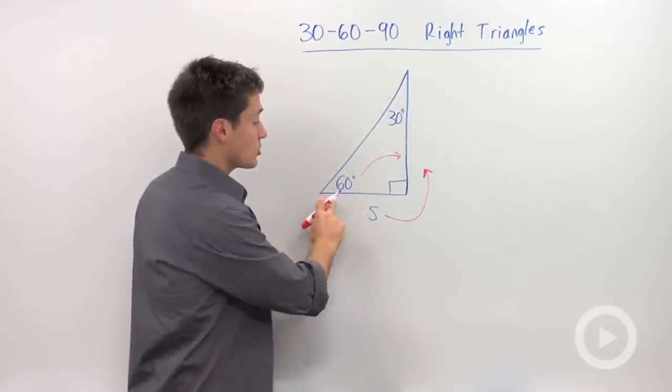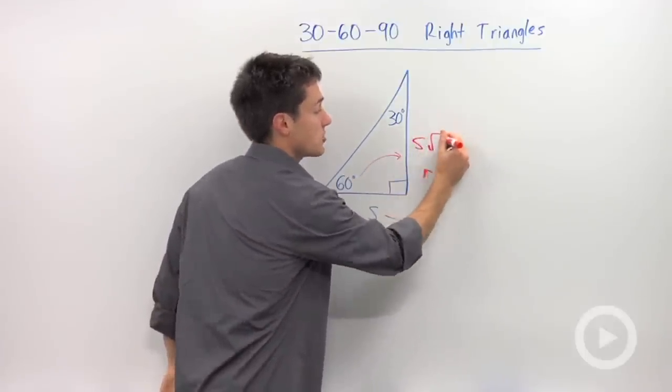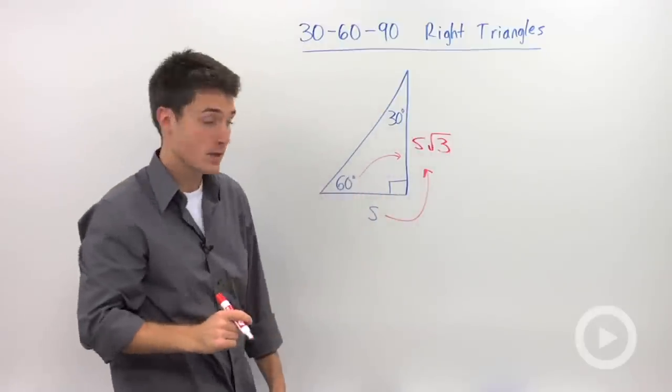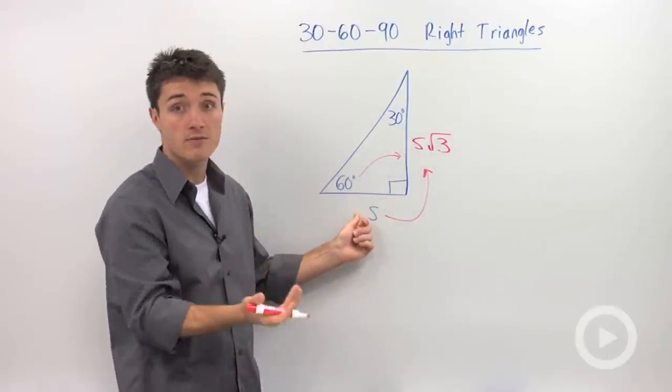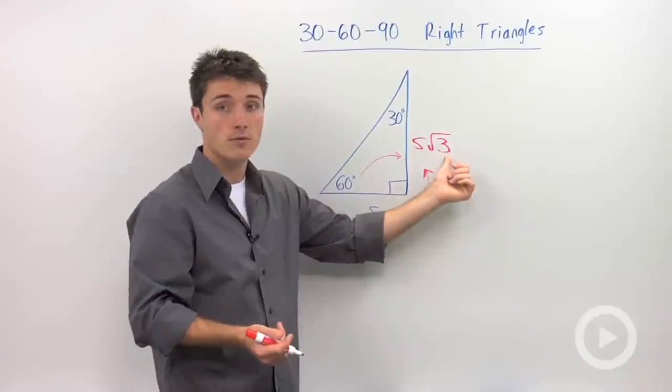So to go from our shorter leg to our longer leg, I need to multiply by the square root of three. So if this side is, let's say, five units, then your longer leg will be five times the square root of three.